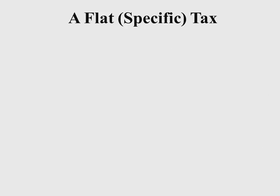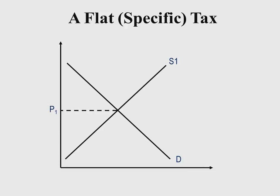Under the indirect tax, we looked at the specific and ad valorem tax. For a specific tax — which is a fixed given amount — with price on the vertical axis and quantity on the horizontal axis, the initial equilibrium is at P1 where demand equals supply S1. If the government imposes a fixed tax, there will be a vertical shift in the supply curve to S2, as shown by the red arrows pointing vertically upward.